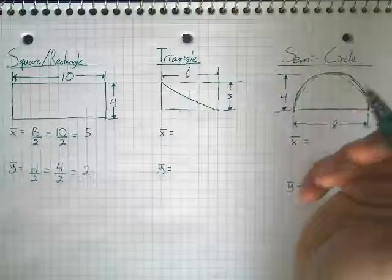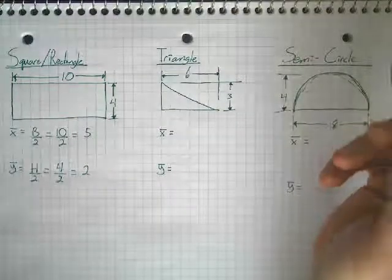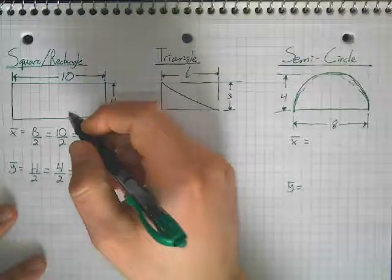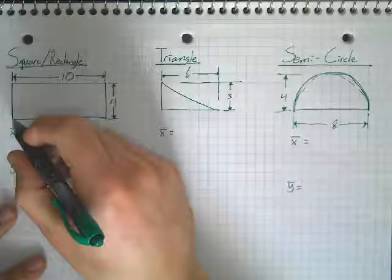That includes when we get into complex shapes, which is going to be important, that you always have a zero point you're basing off of. So, my zero point is the bottom left here.